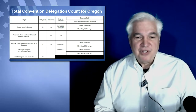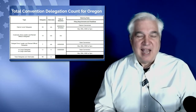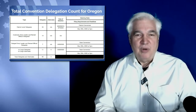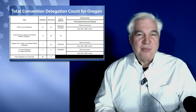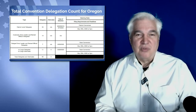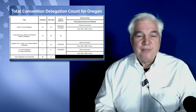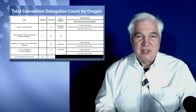The first thing everyone is interested in finding out is how many delegates we get to send from Oregon. In 2012 there were about 1,000 more delegates and the convention was really packed with people. For 2016 they cut back significantly, but we still had around 65 or 66. This time we have 66 delegates, and this slide talks about how the delegates are apportioned amongst the different categories.